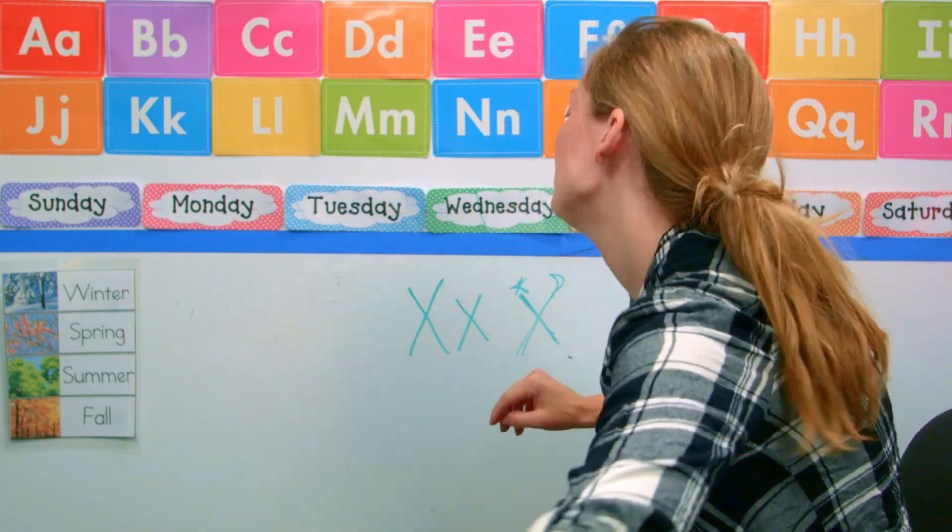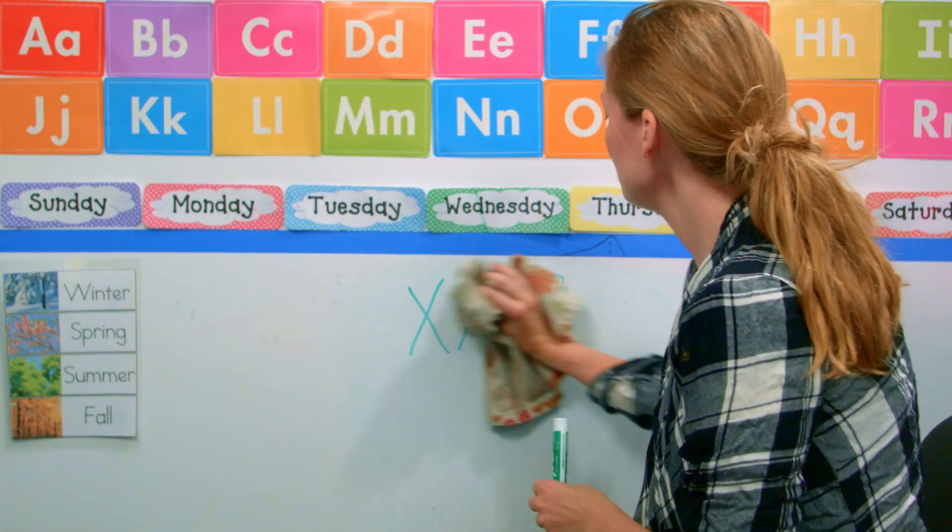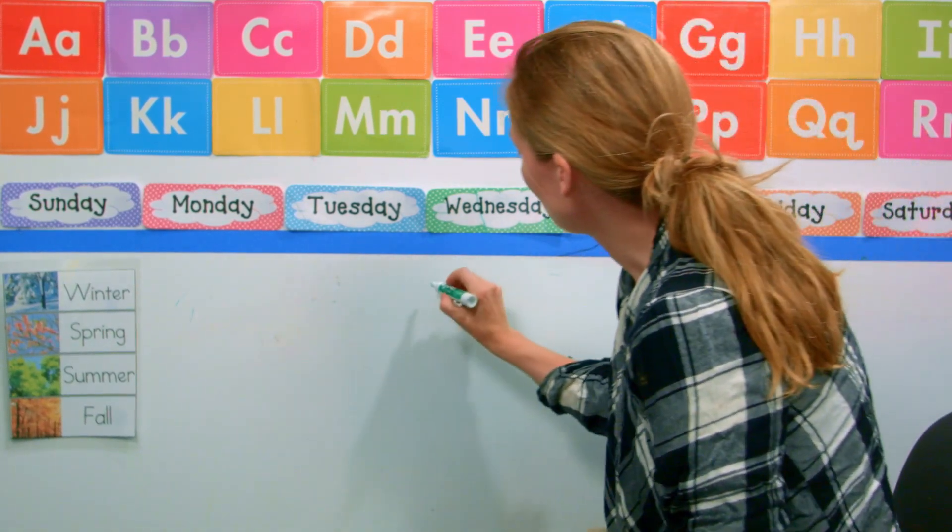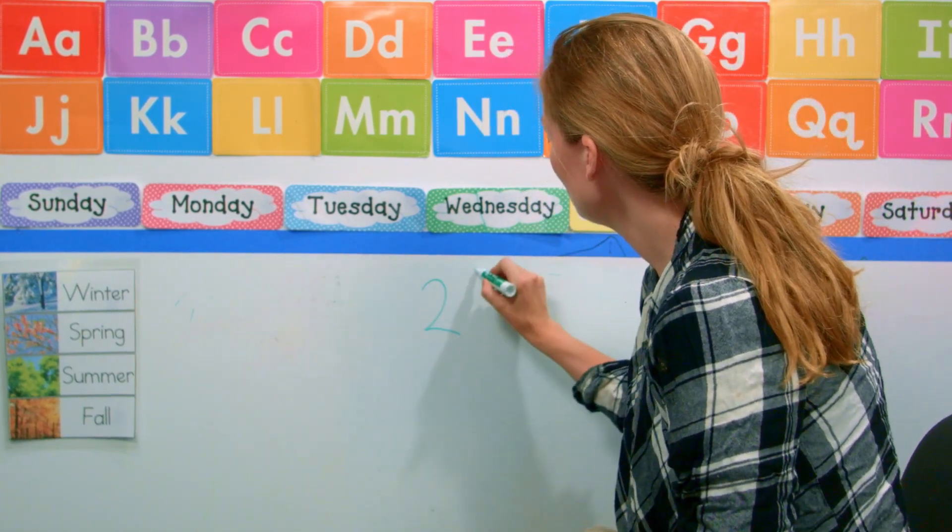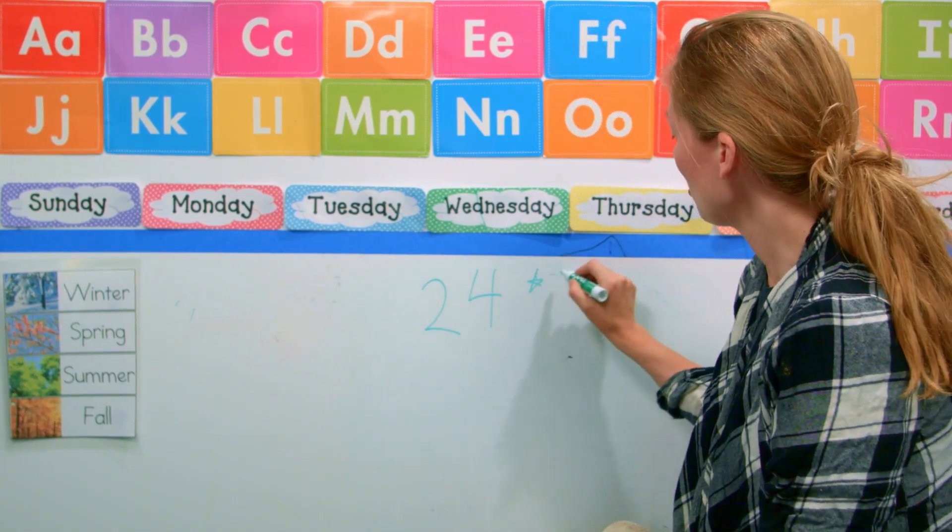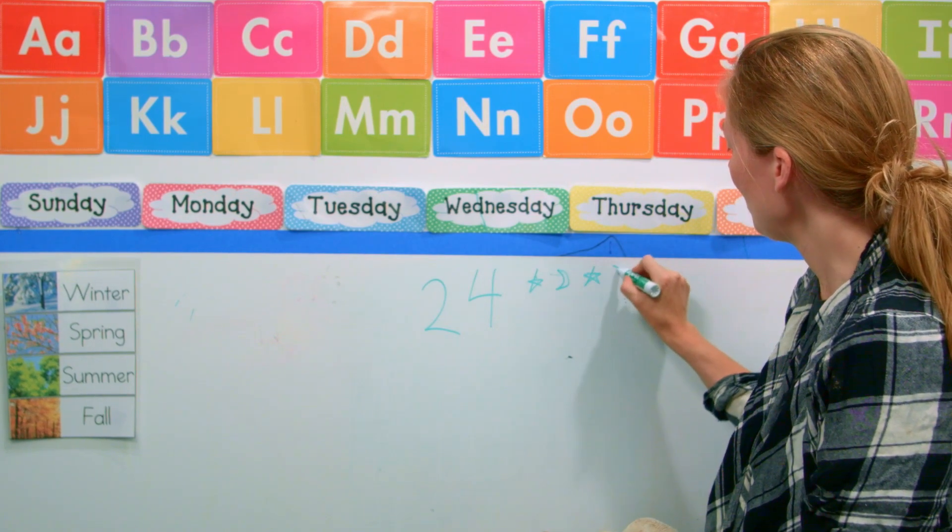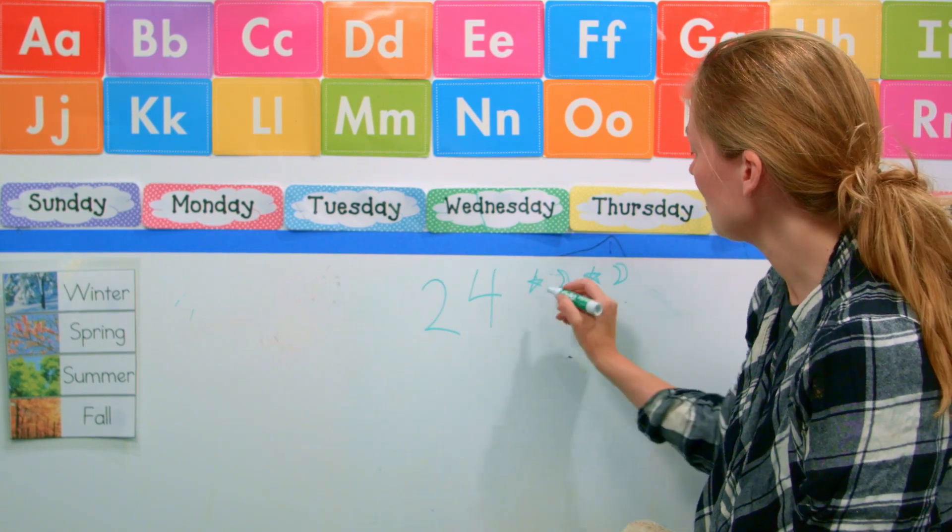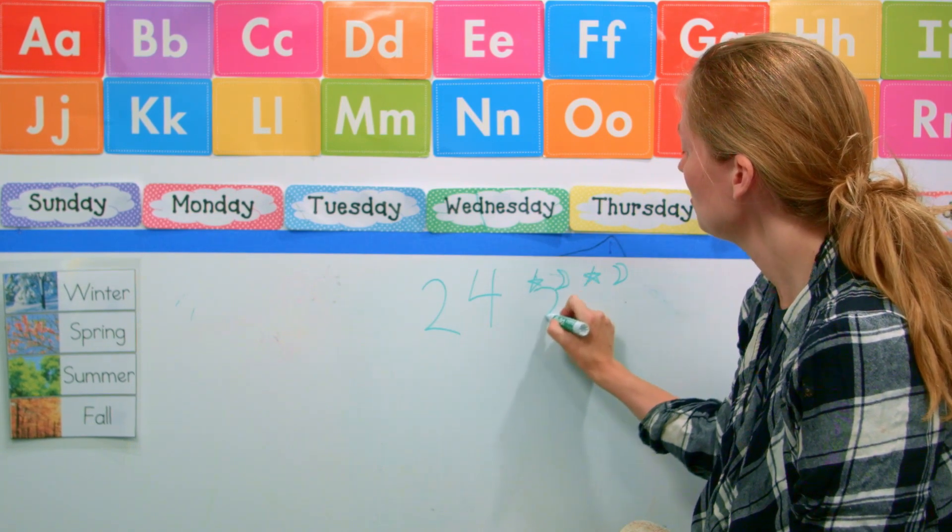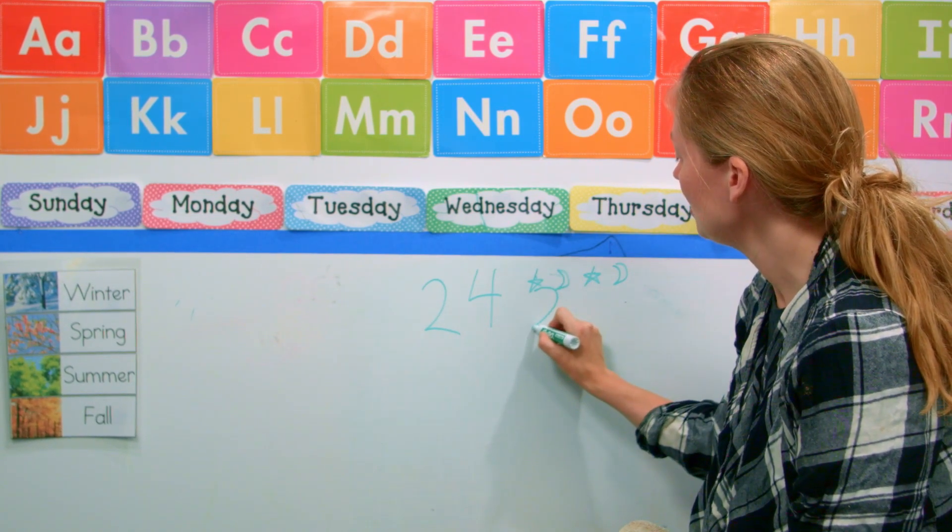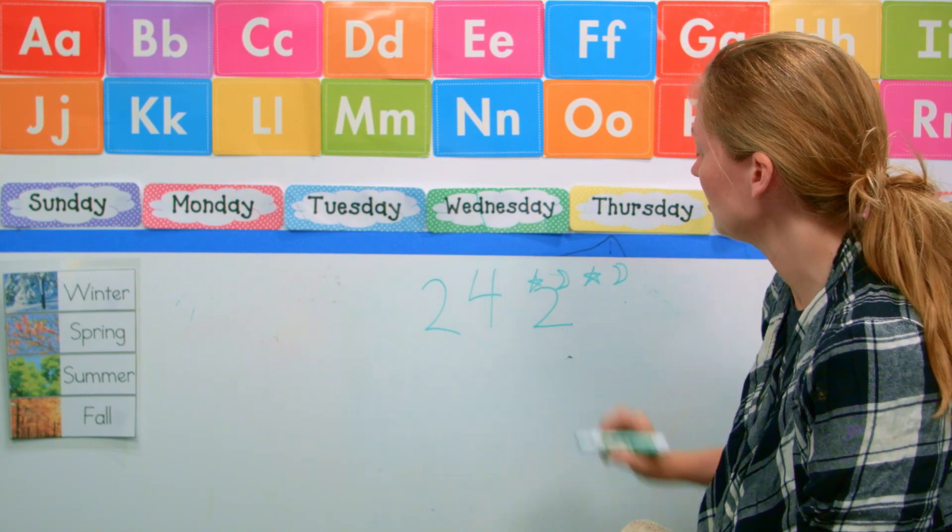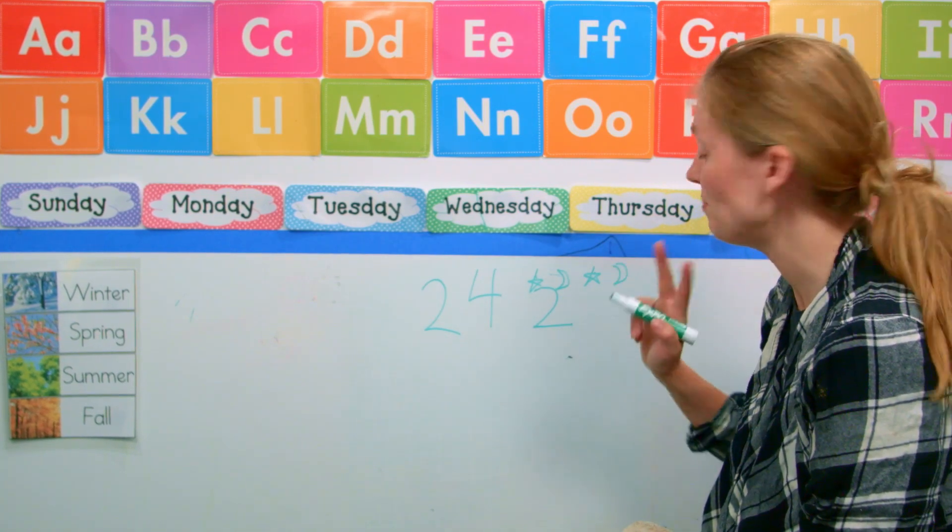We are also working on the number 24 so let me write that, let's erase our X. And our 24 looks like this, here's our two and here is our four. So I'm going to make a star and a moon and a star and a moon. We're going to start here at our start, it's kind of like a backwards C, I call it a rainbow, here's our magic rainbow and then we are going to make a little line and I call it a little road. There we go, there's our two.